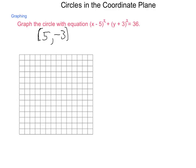Next, what is our radius? Remember that this number here on the end, 36, is our radius squared. That means that our radius is the square root of 36, or simply 6.